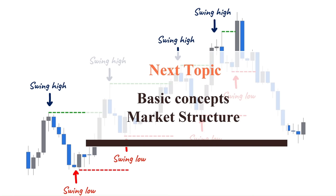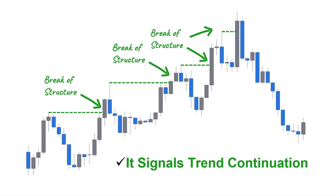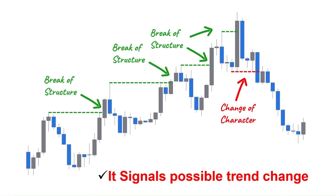Let me show you some basic concepts about ICT market structure. In an ideal uptrend, the market continuously makes higher highs and higher lows. Every time the market breaks a higher high to the upside, we call that a break of structure, and it shows that the market wants to continue in the same bullish direction. On the other hand, if the market breaks a higher low to the downside, we call that a change of character, and it signals a possible trend change.